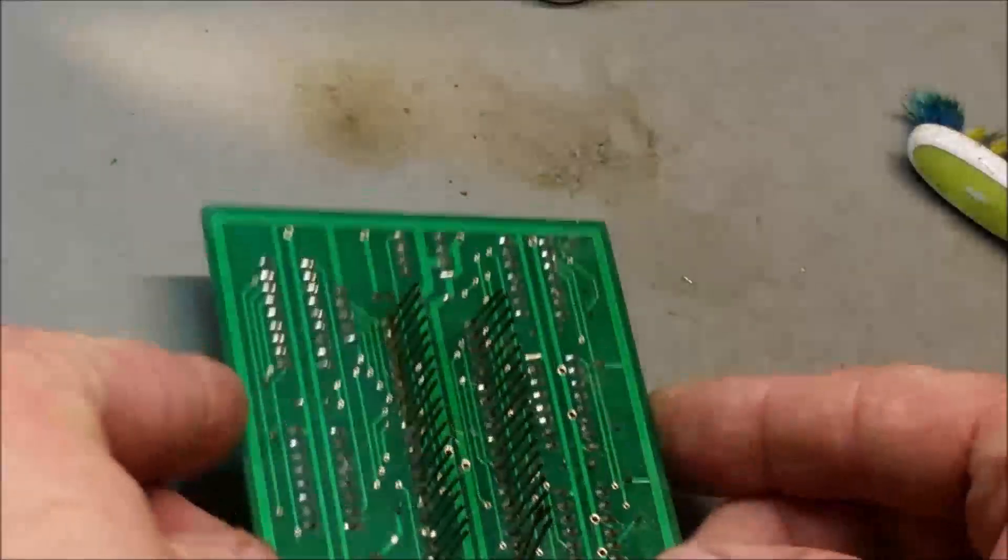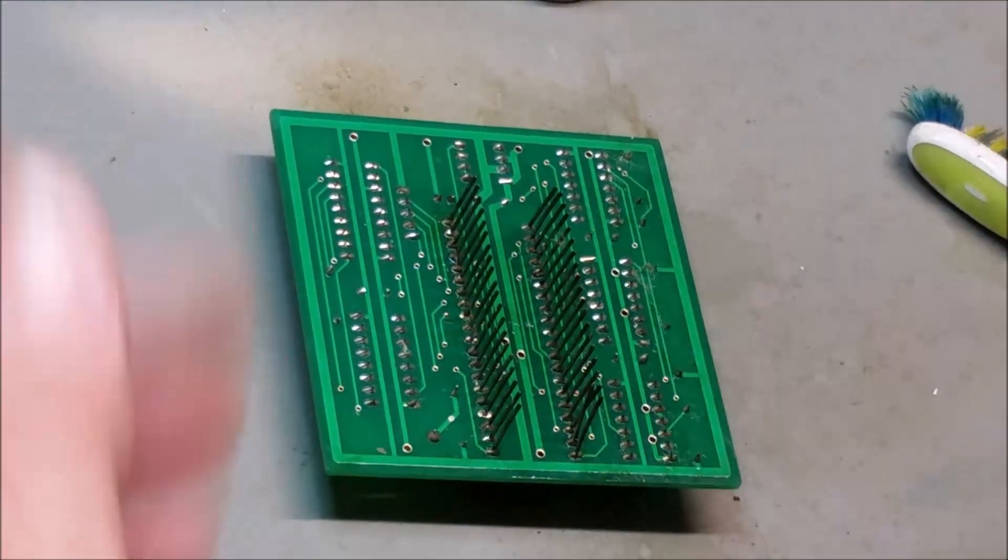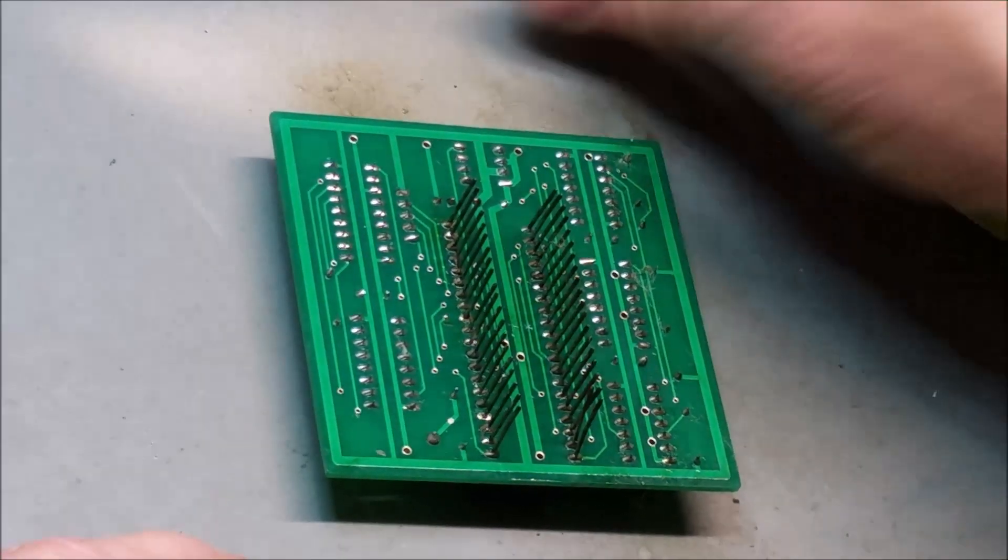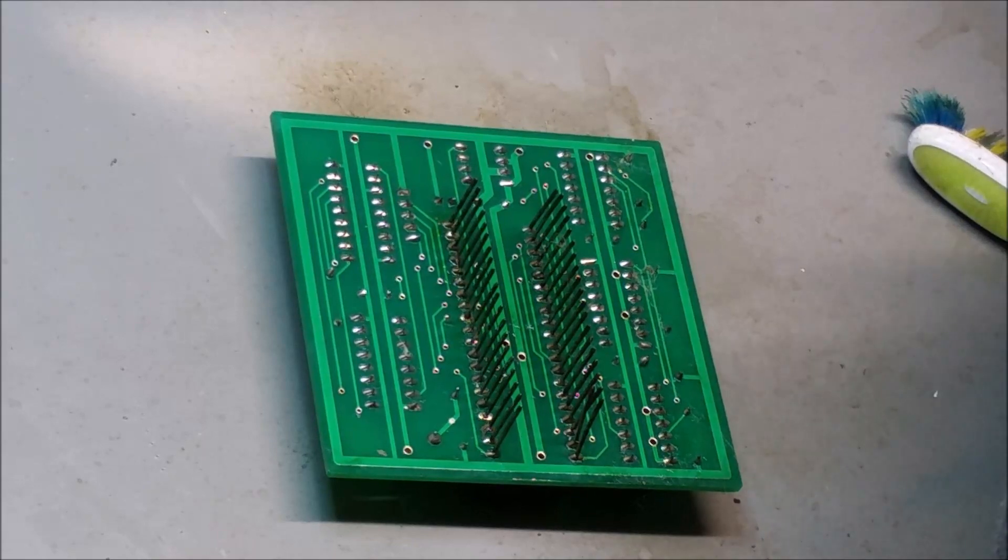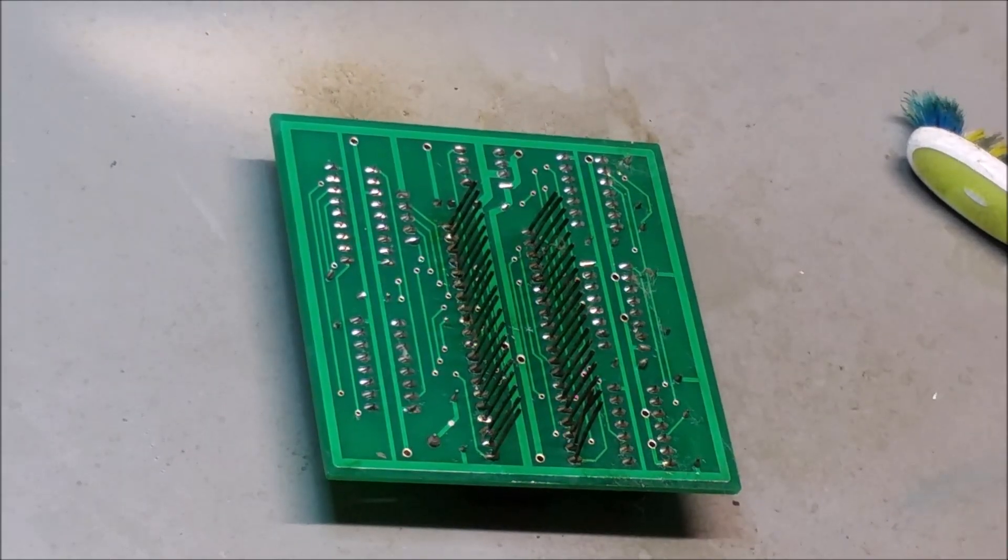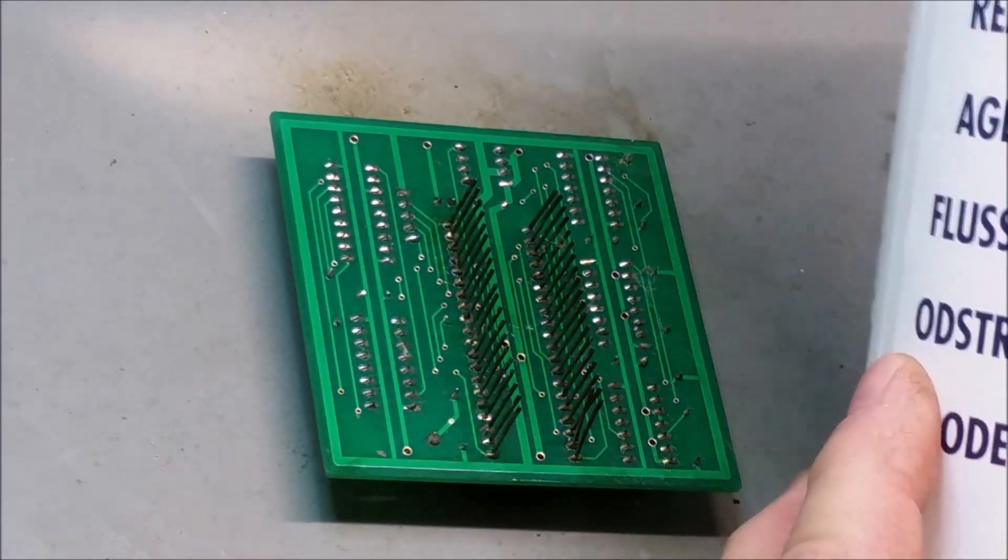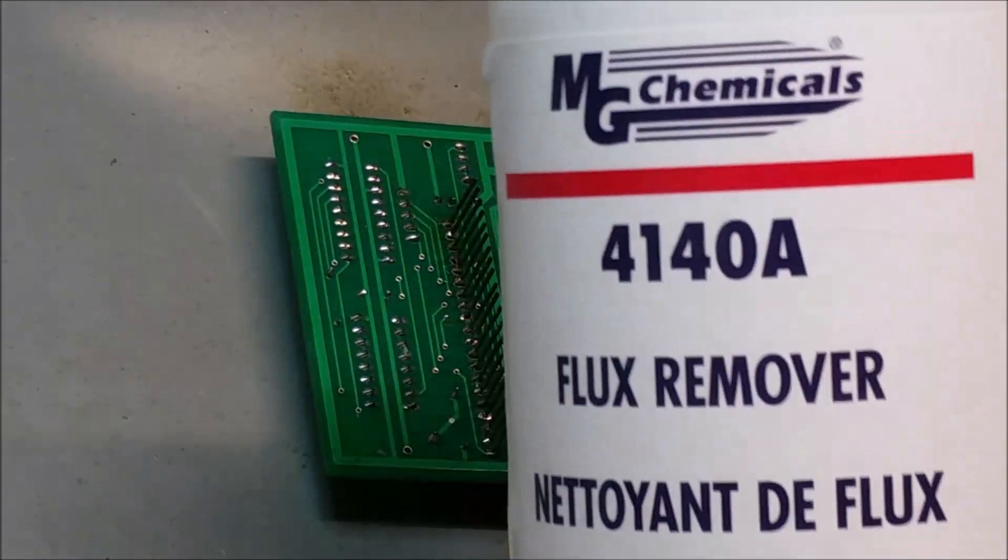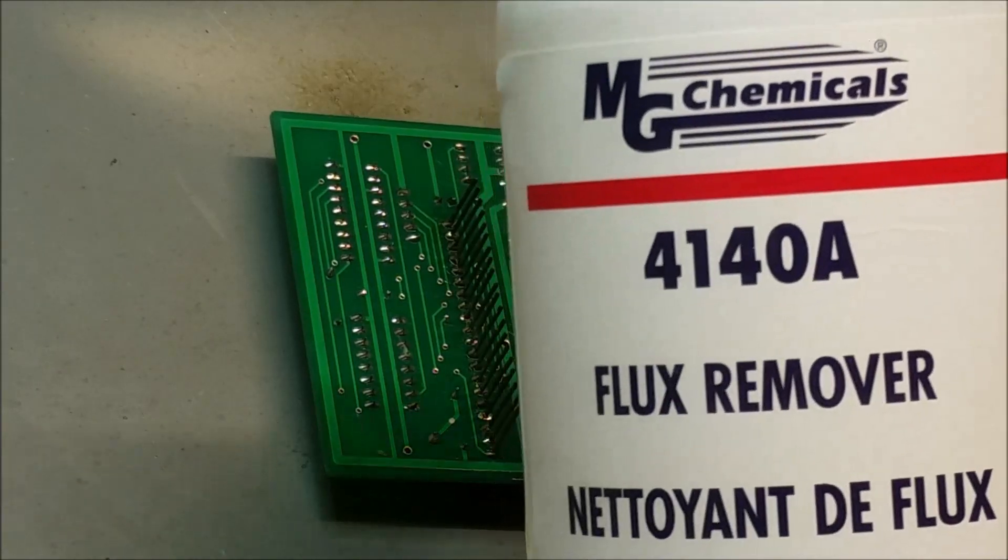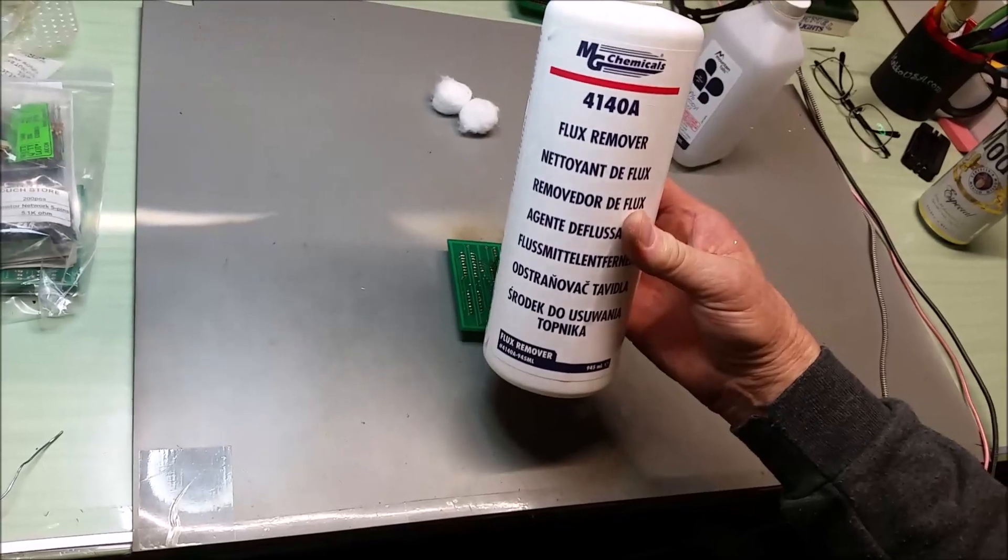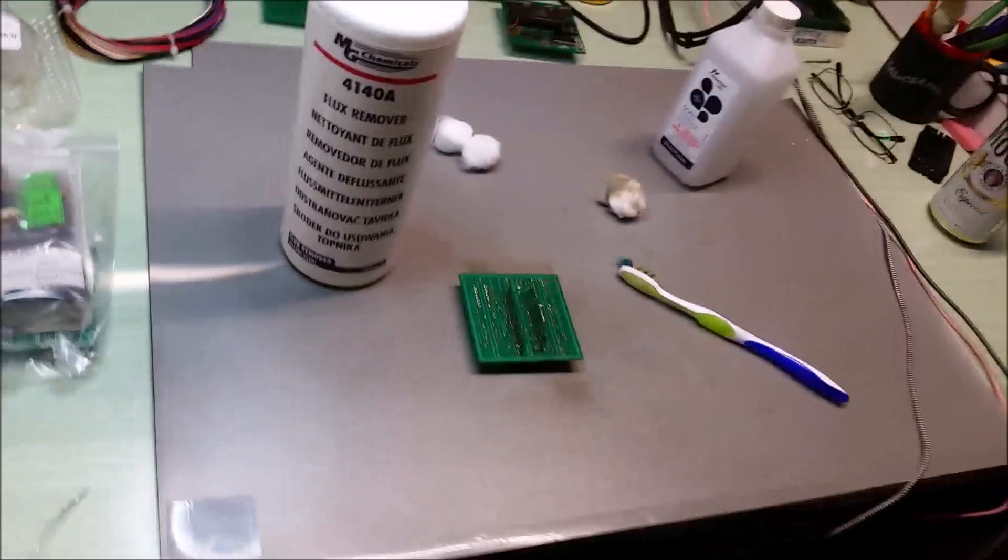So it took all the residues off. And I'm surprised it worked as well as it did. I thought maybe I was going to have to take some printed circuit board cleaner or PCB cleaner, which I use from time to time. This stuff works really well. This is from MG Chemicals, it's called 4140A. And it's a flux remover. So I didn't even need to pull out the big guns.